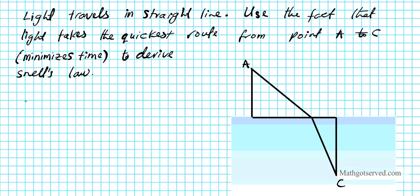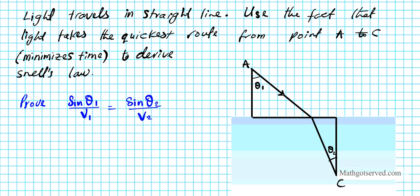We want to show that when light is traveling from point A to C, it uses the quickest route, hence minimizing time. The Snell's Law that we're going to prove here is sine of θ₁ over V₁ equals sine of θ₂ over V₂. In this diagram, θ₁ is this angle and θ₂ is this angle. Light travels in medium 1 from point A, hits an interface at point B, then travels in medium 2 all the way to point C.